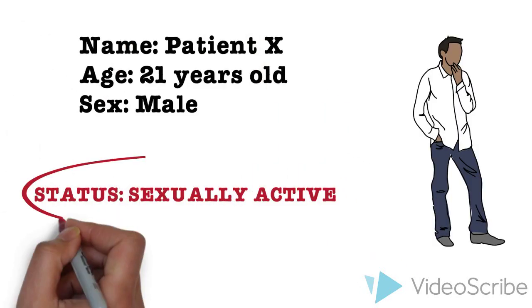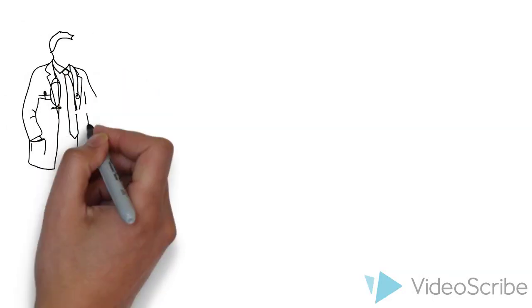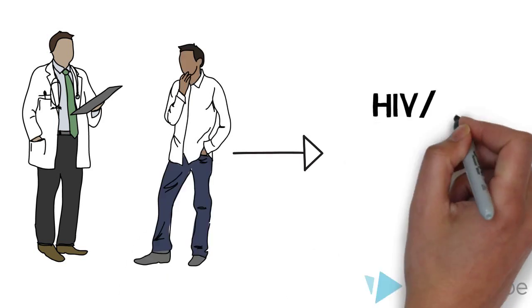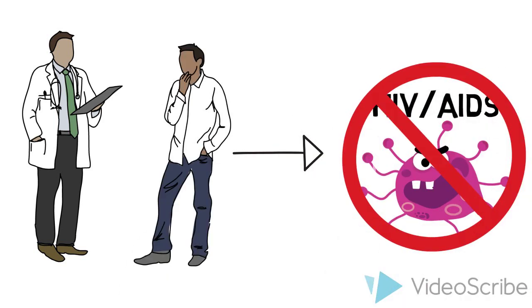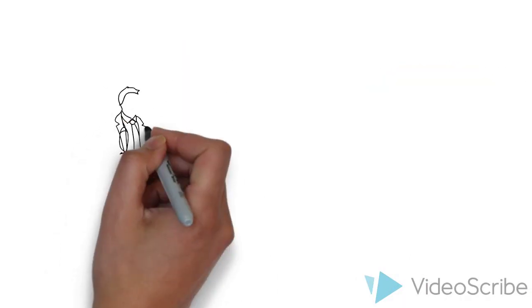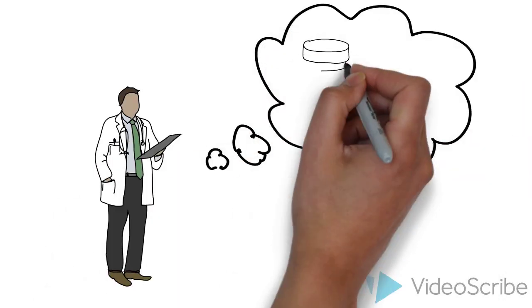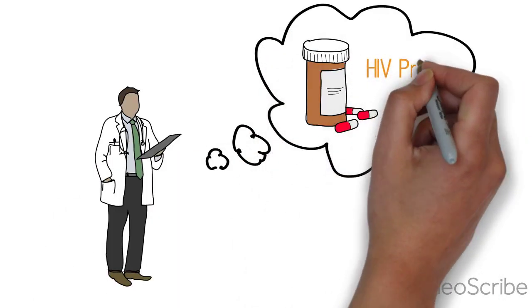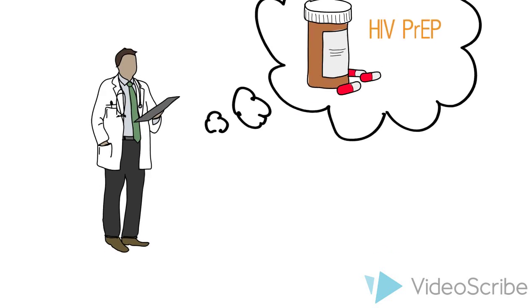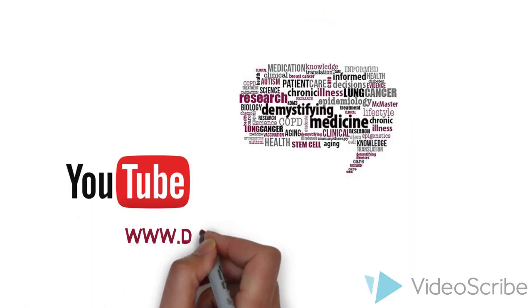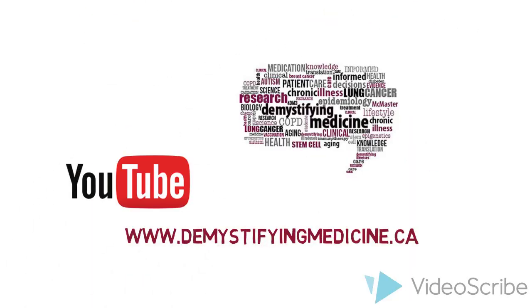Meet Patient X, a 21-year-old male who is currently sexually active. Patient X visits his family doctor to inquire about preventative measures against contracting HIV. His doctor tells him about several different protective methods, one of which is a newly designed HIV-1 prevention pill. To learn more about this drug, Patient X visits the Demystifying Medicine channel.